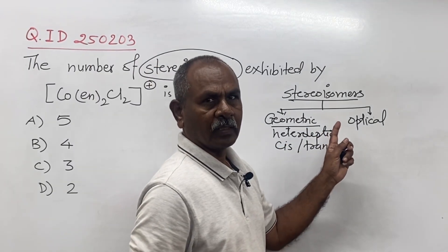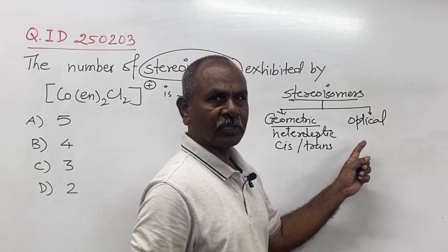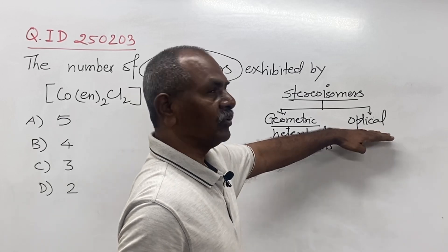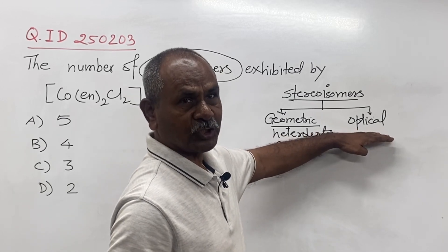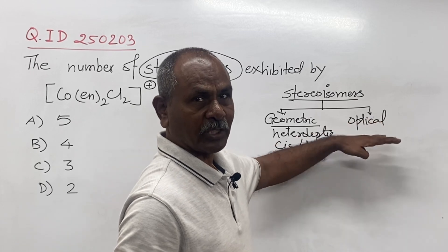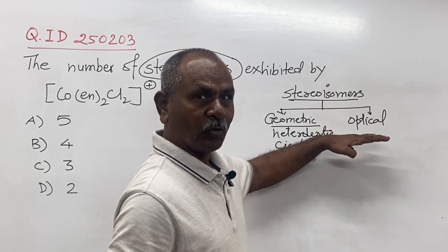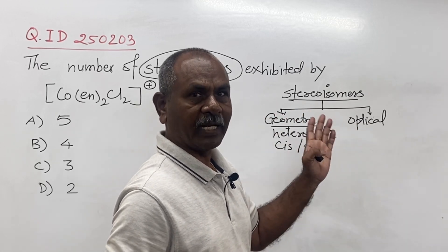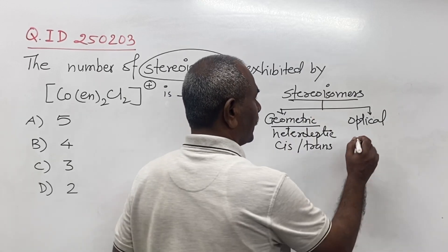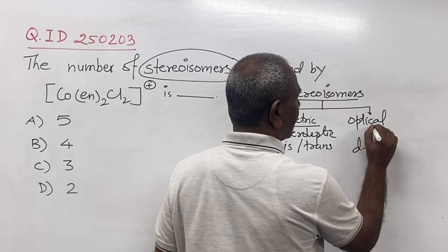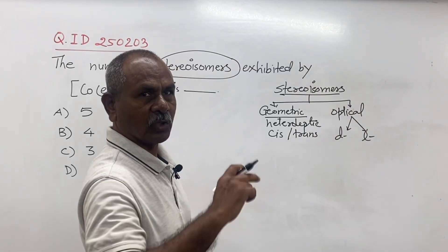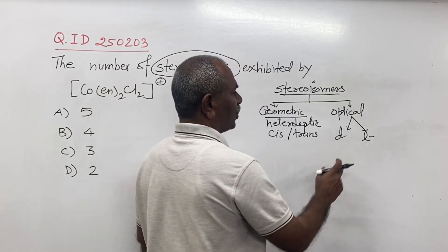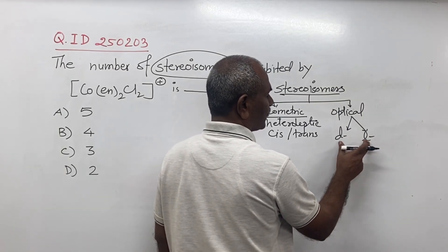Optical means the non-superimposable mirror images of each other. They have same properties but they show different properties particularly in plane polarized light, that is the rotation of plane polarized light. One tries to rotate the plane of plane polarized light to the right hand side is called dextro isomer.